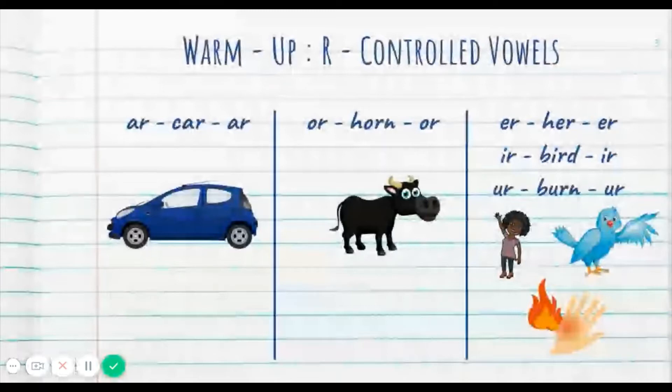So E-R, HER, ER. Go. Good. E-R. Whoa, Ms. Howard got tricked. Be careful. I-R, burn, ER. Go. U-R, burn, ER. Go. See, you got it. You didn't get tricked. You tricked me. Pretty good.